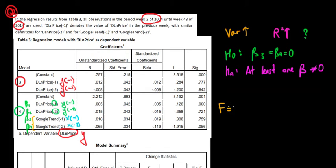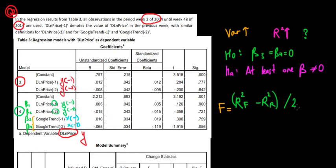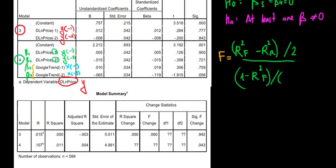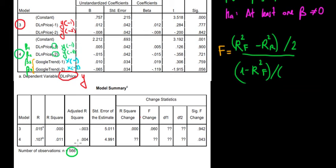We are going to do an F-test on R-squared. We compare the difference in R-squared of the full model (model 4, with 4 variables) relative to the R-squared of the restricted model (model 3, with only 2 variables), divided by the number of additional variables — which is 2 — over 1 minus the R-squared of the full model, divided by 566 minus 4 (the number of explanatory variables in the full model) minus 1.